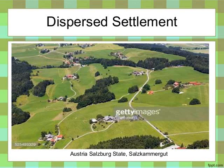Houses or huts in dispersed settlements are usually connected by cart tracks or paths. Cattle rearing is common, as each household has cattle that is allowed to graze in open fields. Also, the land is not very fertile to support big populations.